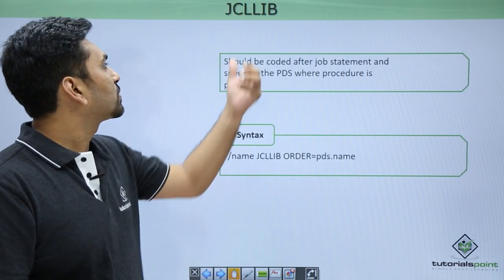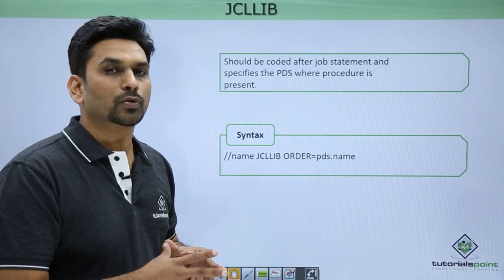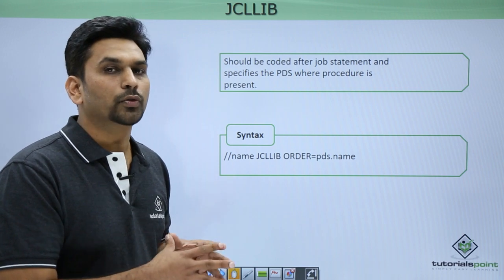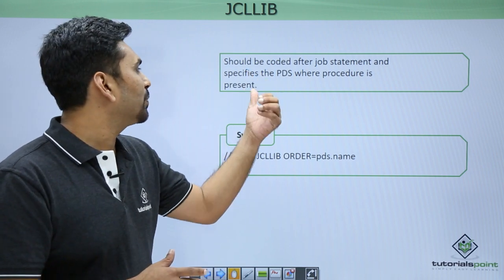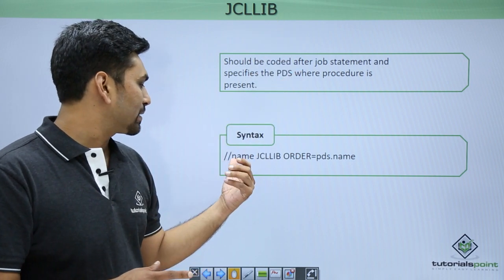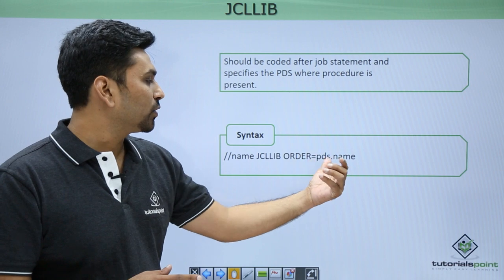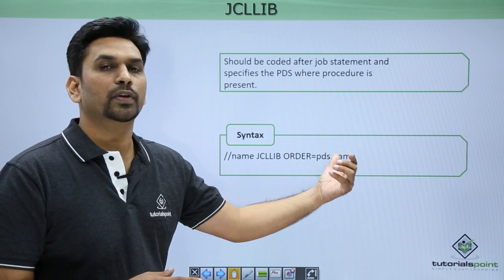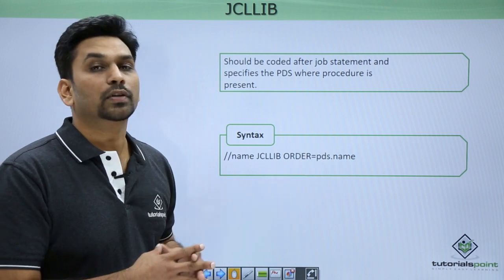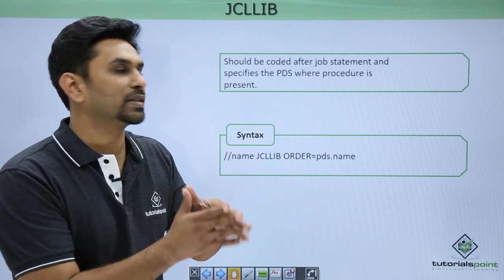Next we have JCL lib. This one is for procedures. Suppose you have coded one catalog procedure — that procedure will be present in some library. For that you need to code the JCL lib. If you are using procedures then only you need to code JCL lib. The syntax is: name, then the keyword JCLLIB, then in order you need to mention the name of the PDS where your catalog procedure is present. It should be just after the job statement — no statement should be present between the job statement and the JCLLIB.